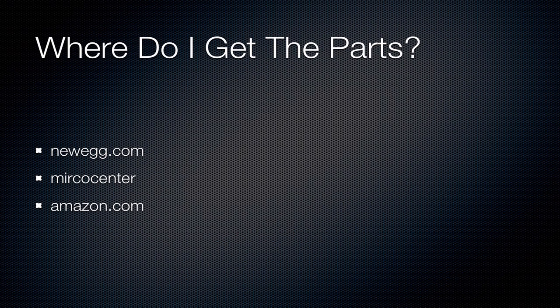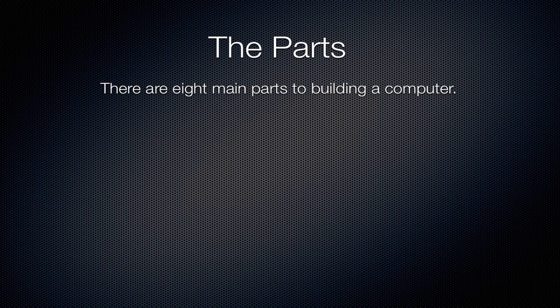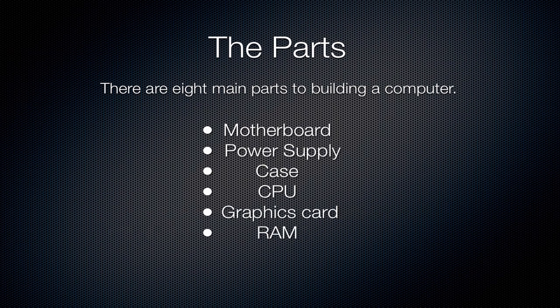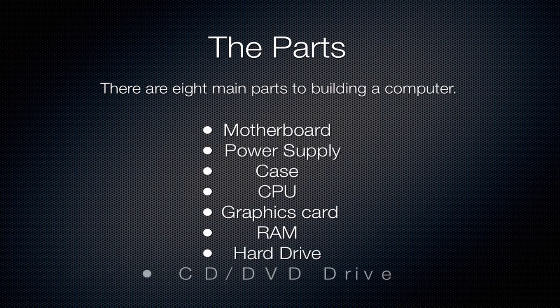Those are really the three. So the parts — there are eight main parts to building a computer, and some of them you don't even need. One is the motherboard, then the power supply, the case, the CPU or processor, the graphics card, RAM or memory, your hard drive or storage, and a CD or DVD drive.